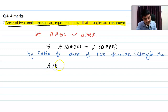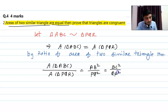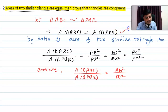By the theorem on ratio of areas of two similar triangles: area of triangle ABC / area of triangle PQR = AB² / PQ² = BC² / QR² = AC² / PR². Since the two triangles have the same area, we label this as equation 1.